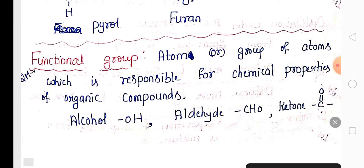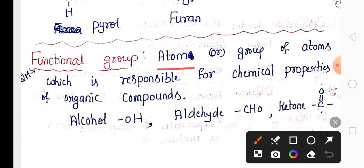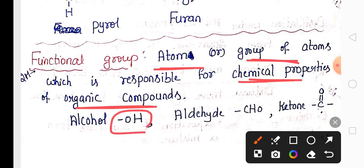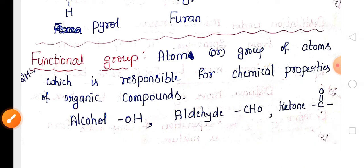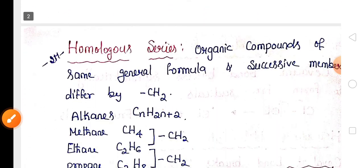Functional group definition: a functional group means atoms or a group of atoms which are responsible for the chemical properties of an organic compound. For example, –OH is alcohol, –CHO is aldehyde, and there are also ketones and carboxylic acids. These are the different functional groups in organic chemistry.